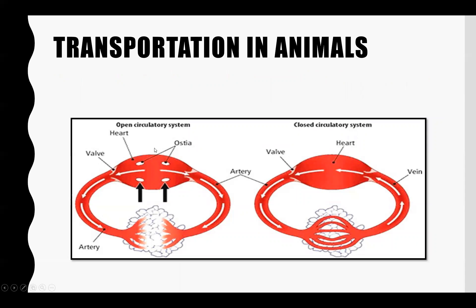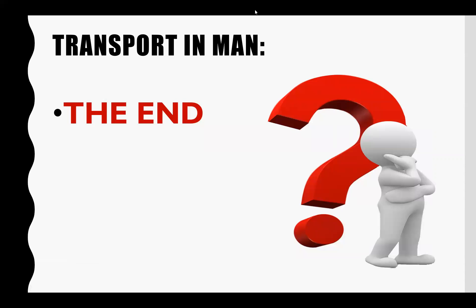Now we show you both systems in the diagram. In the open circulatory system, there are no blood vessels differentiated into arteries, veins, or capillaries — the heart pumps blood directly into the spaces between the cells for direct blood contact for nutrient and waste exchange. In the closed circulatory system, blood vessels differentiated into arteries, veins, and capillaries keep blood enclosed, and capillaries help with nutrient and waste exchange between blood and tissues. Our topic ends here. If you have questions, you can ask — questions are appreciated.